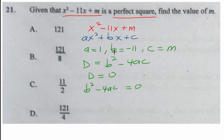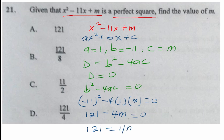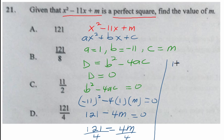Substituting a, b, and c: negative 11 squared — remember to use parentheses so you get positive 121 — minus 4 times 1 times m equals 0. So 121 minus 4m equals 0. Moving 4m to the right: 121 equals 4m. Dividing both sides by 4 gives m equals 121 over 4. Looking through the options, that is option D.